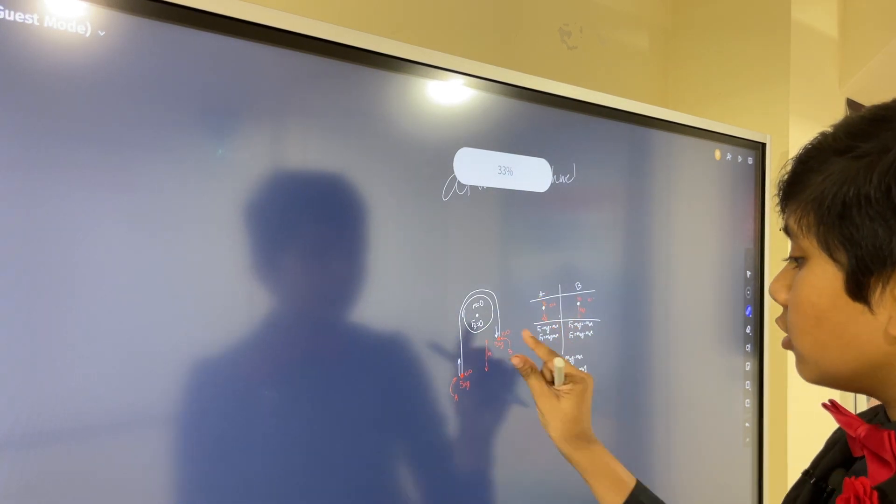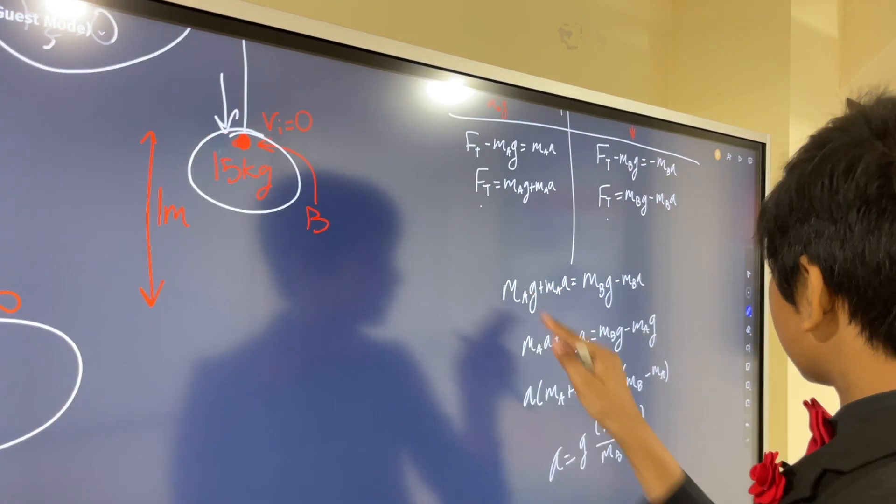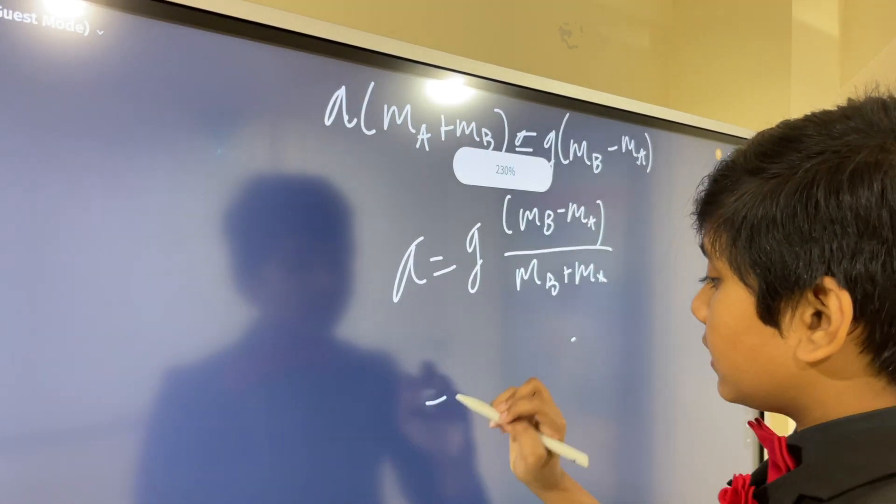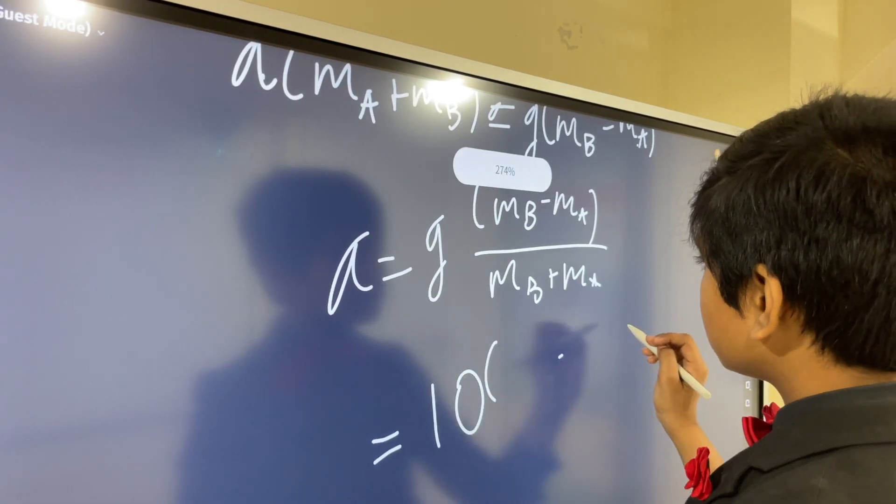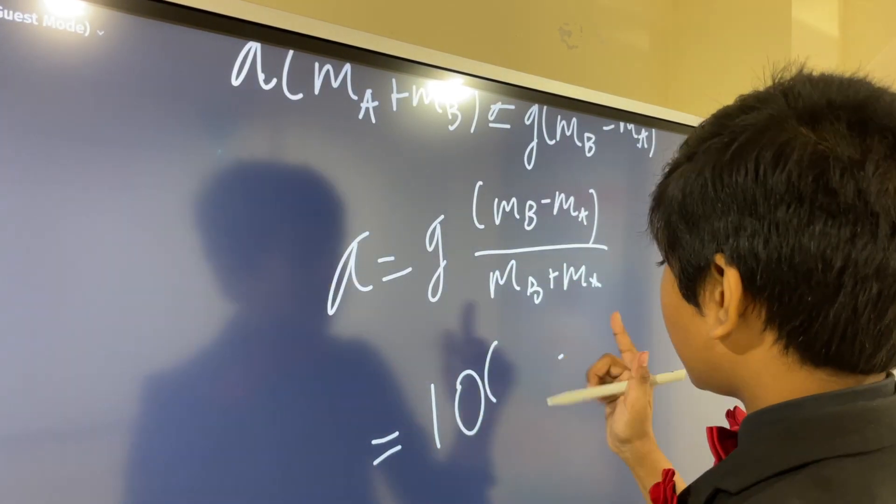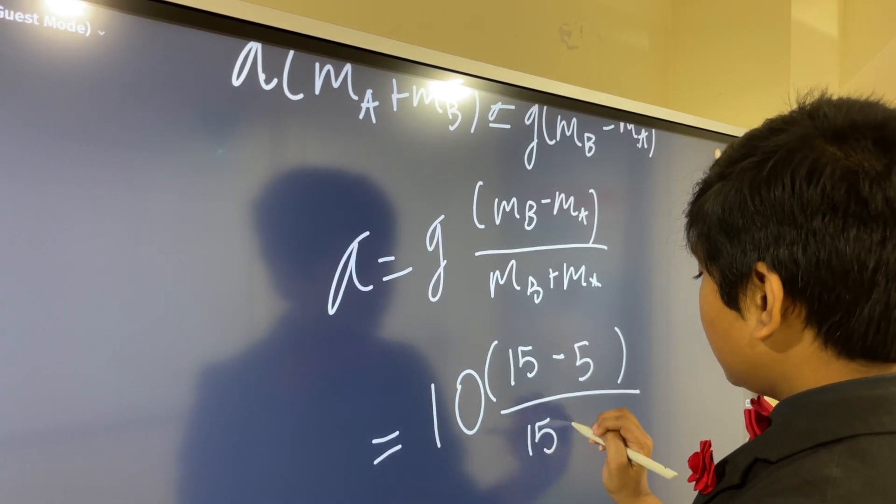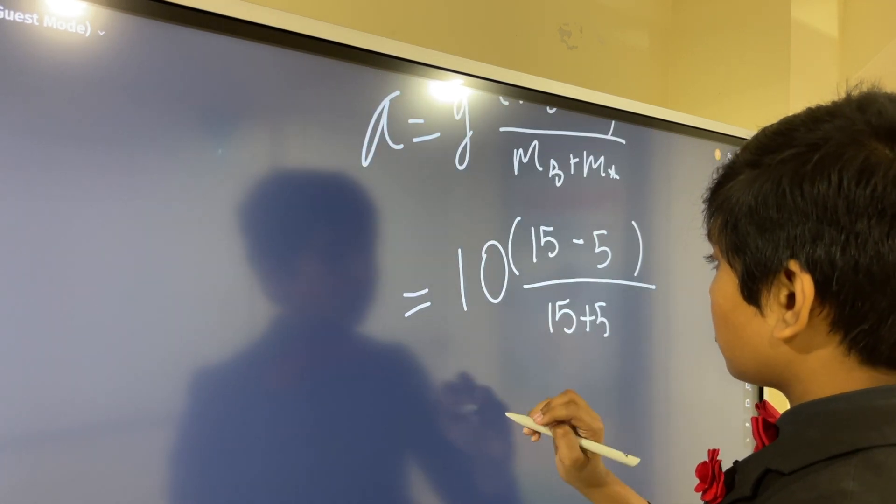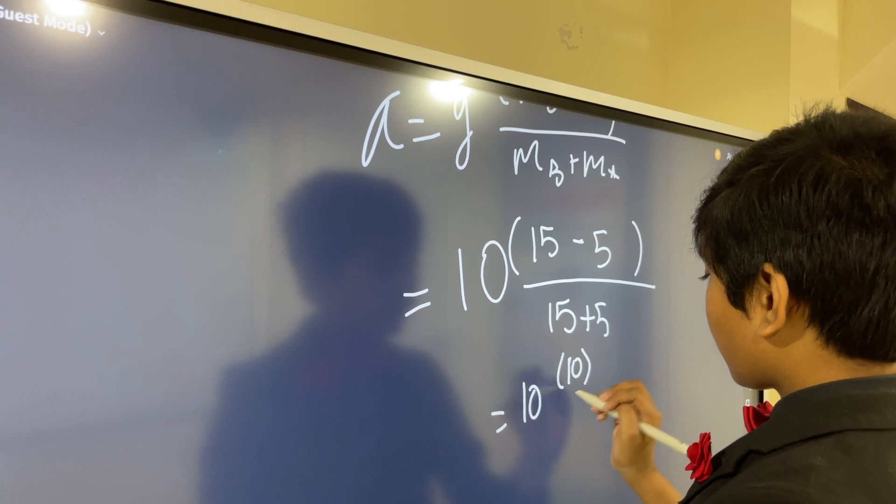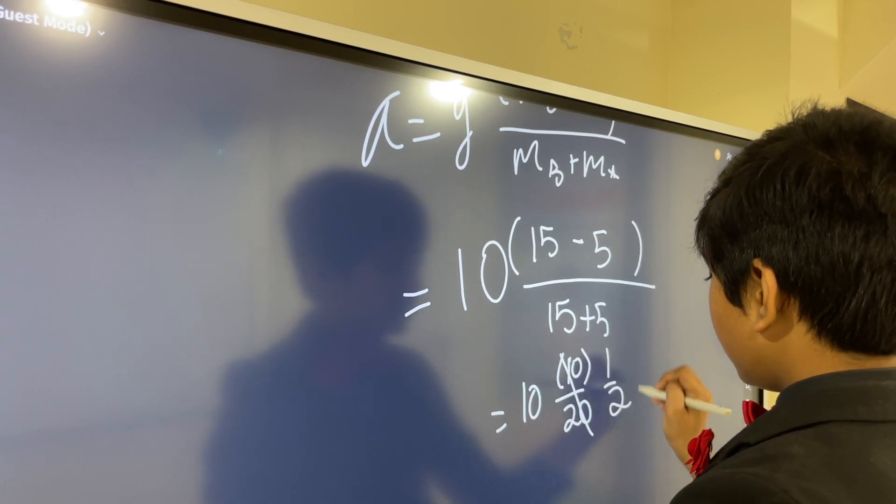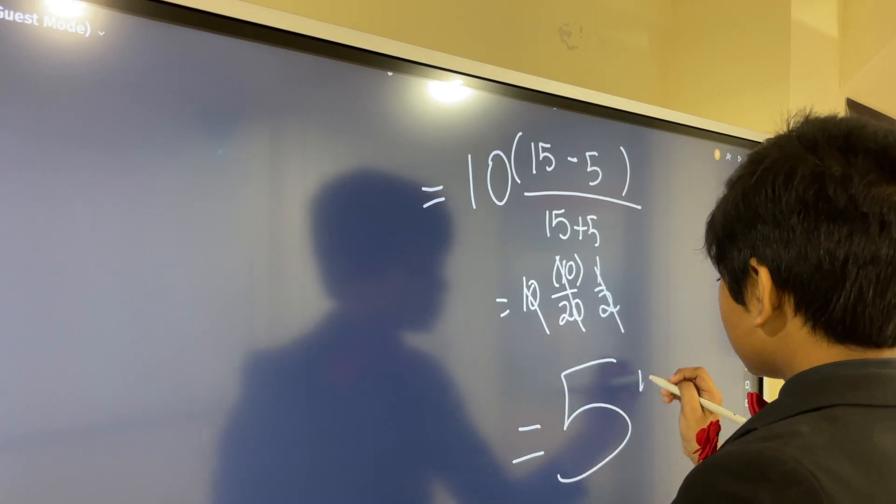Okay. So, now, MB is 15 kilograms and MA is 5 kilograms. Let's plug that in. We have 10. Yes, I am using 10 times. Well, we have MB minus MA 15 minus 5 over MB plus MA 15 plus 5. So, we have 10 times 10 over 20, which is 1 half, and 10 times 1 half is just 5 meters per second squared. Never forget your units, kids.